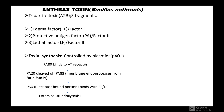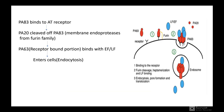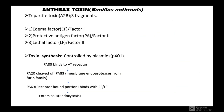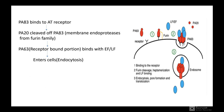PA83 binds to the cellular receptor. PA20 gets cleaved from PA83 by membrane endoproteases of the furin family. PA63, the receptor-bound portion, then binds with the Edema Factor or Lethal Factor and enters the cell via endocytosis, as shown in the diagram.